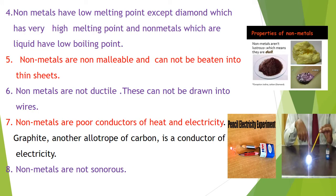Non-metals have low melting points, except diamond which has a very high melting point. Mostly non-metals have low melting point. Non-metals are also non-malleable and cannot be beaten into sheets. When these are beaten, they turn into powder or particles.